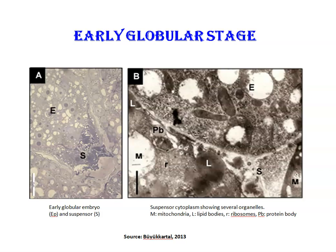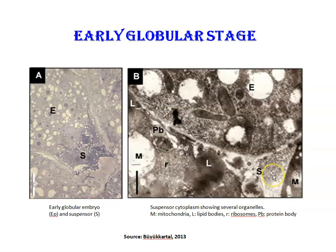When the embryo proper reaches the early globular stage of development, the basal cell undergoes further differentiation and consists of four or six cells. Plasmodesmata occur in the common wall between the suspensor and the embryo cells, with several electron-dense inclusions in the space between them. The cytoplasm of the suspensor cell contains mitochondria, endoplasmic reticulum, ribosomes, lipid bodies, small protein bodies, and vacuoles.